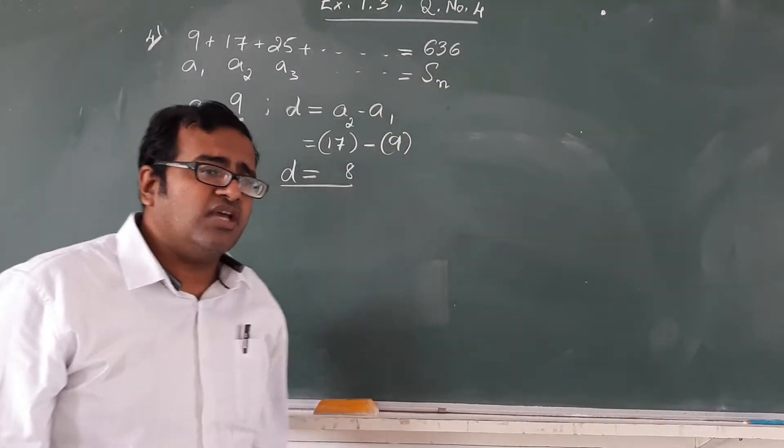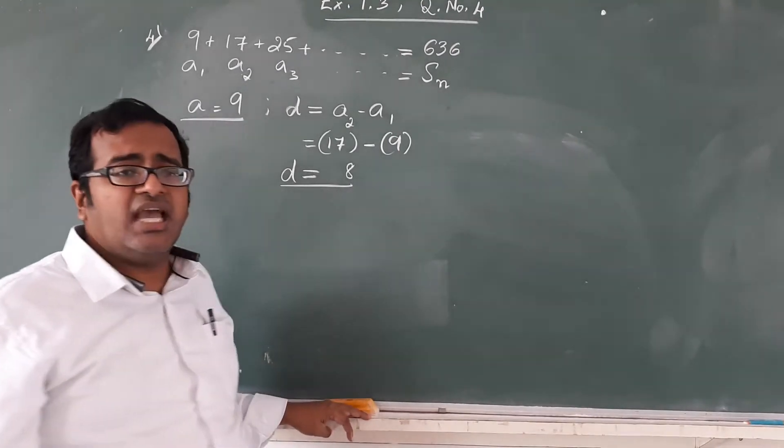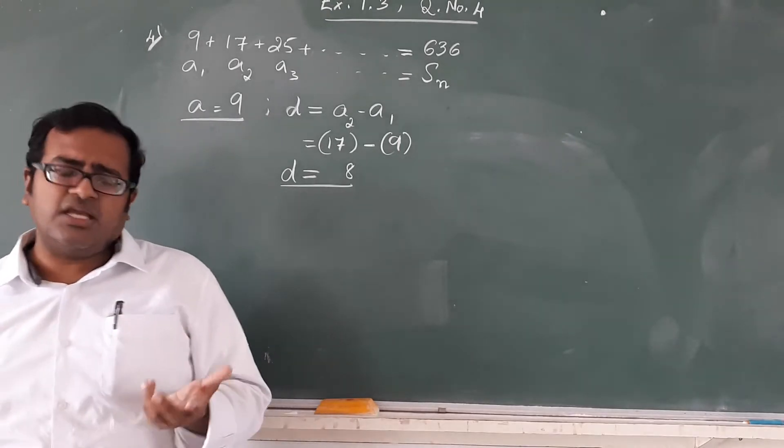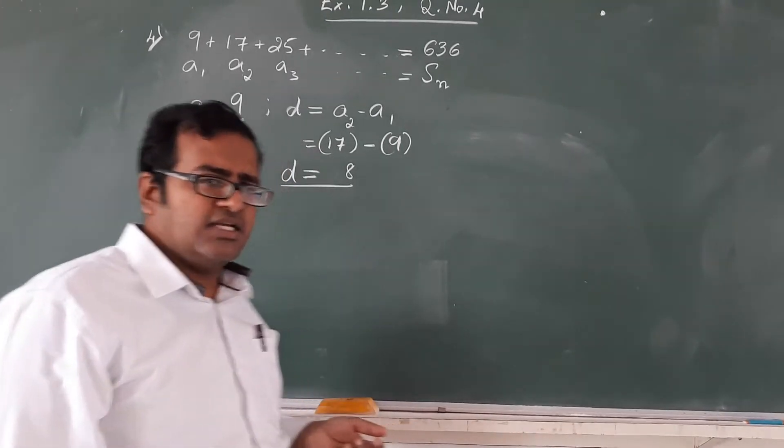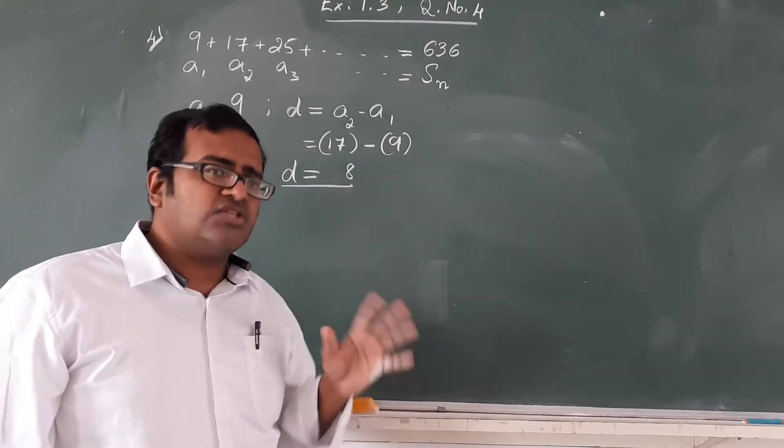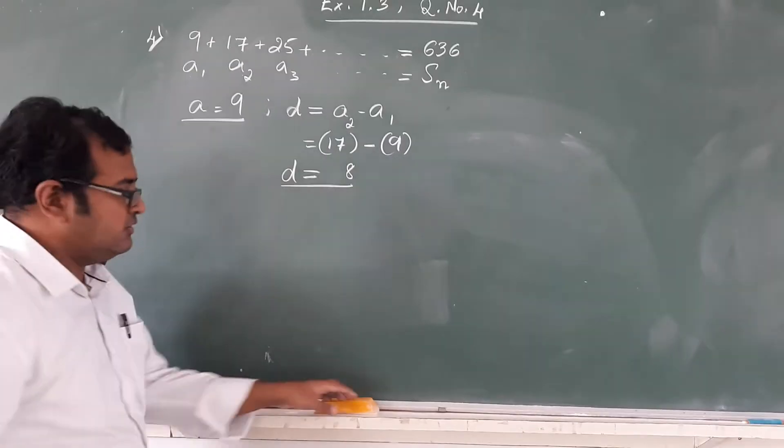By using the formula Sn equals n upon 2 times 2A plus n minus 1 times D, we can find out the n value. We will land up with a quadratic equation which we will have to factorize later. We are most probably going to get 2 values of n of which we have to select the most appropriate one. This will be our course of action.